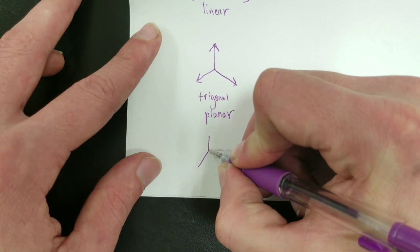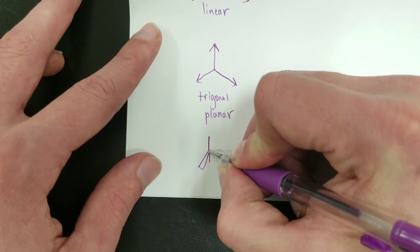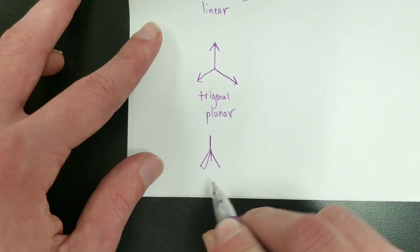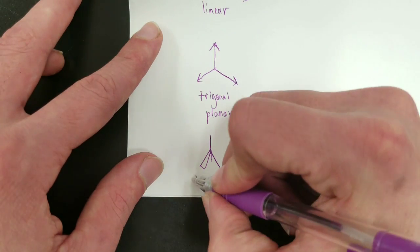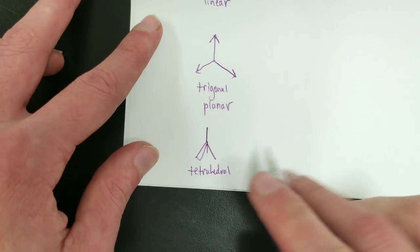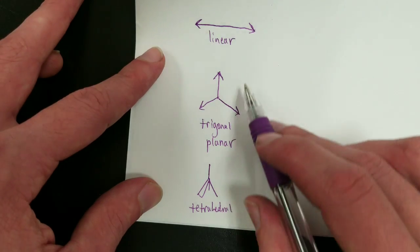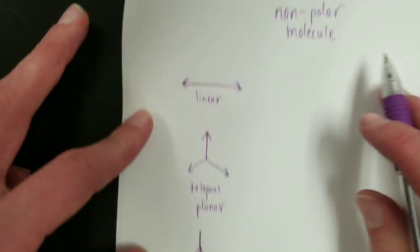The tetrahedral shape, I will attempt to draw it. Here's the top part, here's an atom coming toward, there's an atom going away, here's one to the side. Tetrahedral would also see these forces cancel out. So all three of these, if they contain polar bonds, would produce a non-polar molecule.